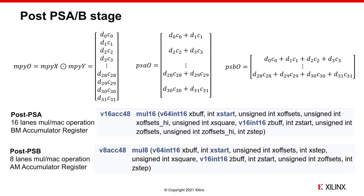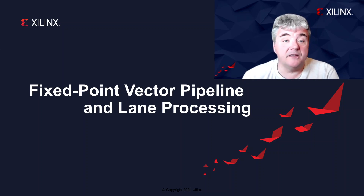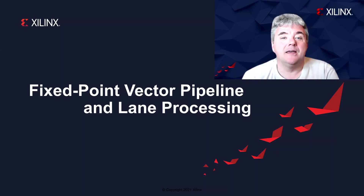These kinds of intrinsics are interesting for multiply-accumulate operations, as in FIR filters and matrix operations. As there is already some accumulation performed within PSA and PSB, you can fully use the multiply stage while keeping a reasonable number of output lanes, or you can mitigate the amount of data you need to load from memory by efficiently using the permute blocks at the beginning of the pipeline. Thank you for watching this video on the fixed-point vector pipeline and lane processing on the A-Engine. See you in another video.